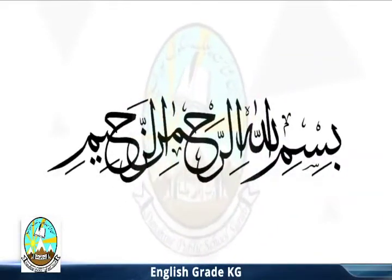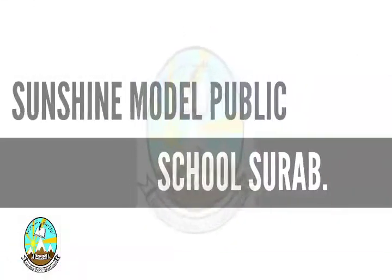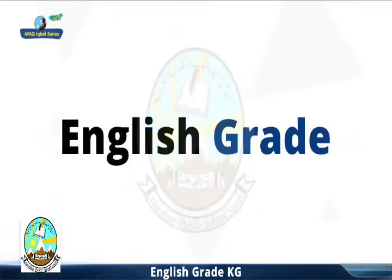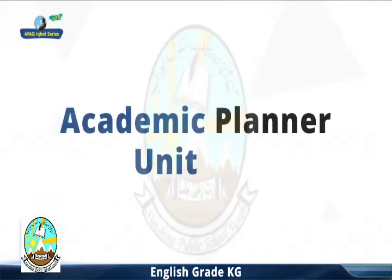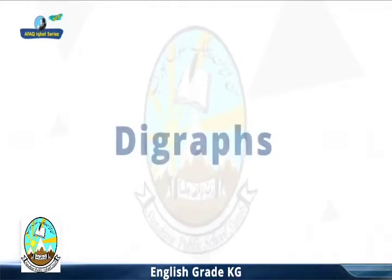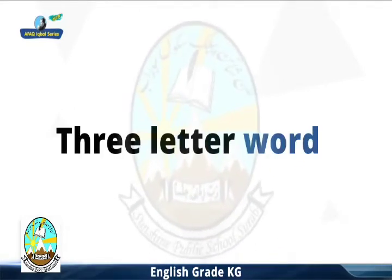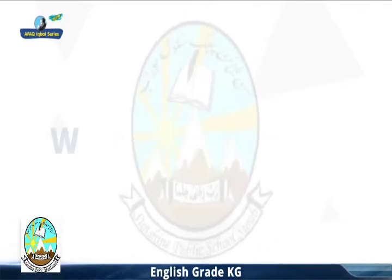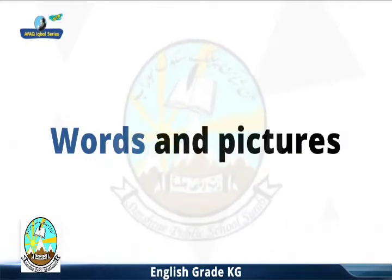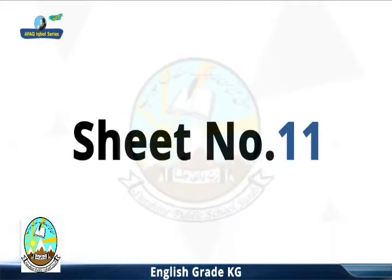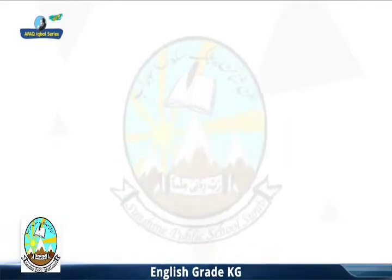Bismillahirrahmanirrahim. English Grade KG Academic Planner Unit 2 Major Concepts: Diagraphs, 3 Letter Words, 1 Syllable Words, Words and Pictures, Rhyming Words, Poem, Feelings, Your Name. Sheet Number Eleven.